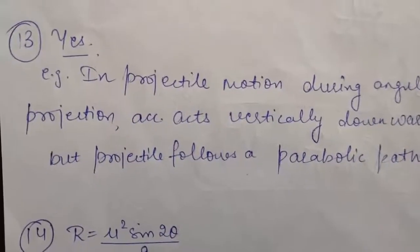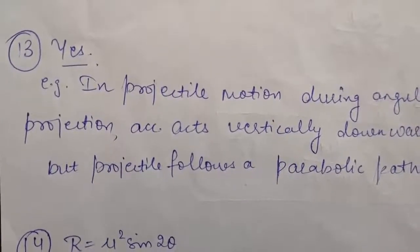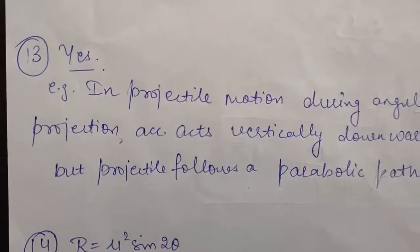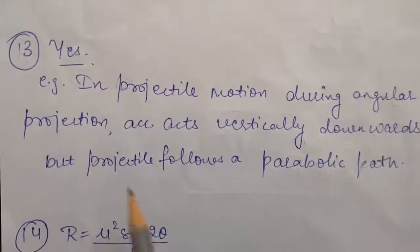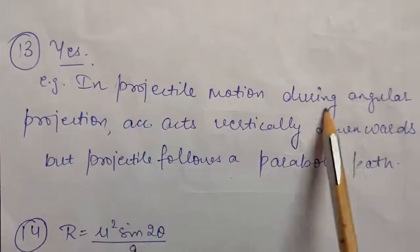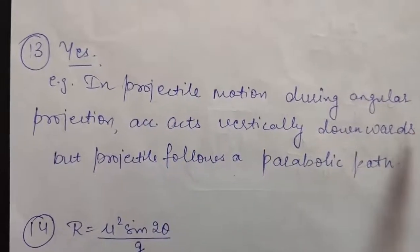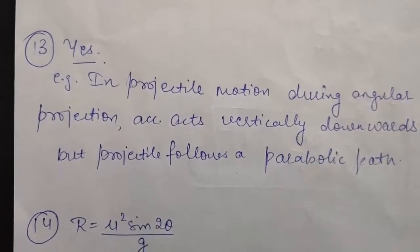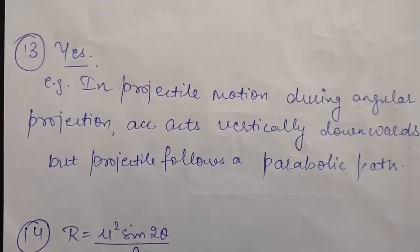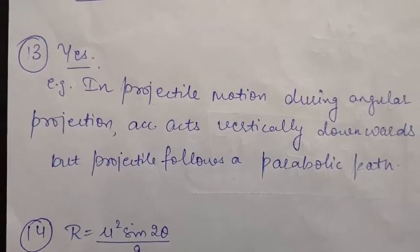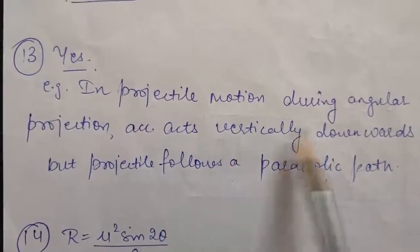In question number 13, it is asked: can there be motion in two dimensions with an acceleration only in one dimension? The answer is yes, it is possible. For example, in angular projection — that is in projectile motion — acceleration acts vertically downwards as g, but still the projectile follows a parabolic path. That means motion is in two dimensions while acceleration is only in one dimension, vertically downwards.